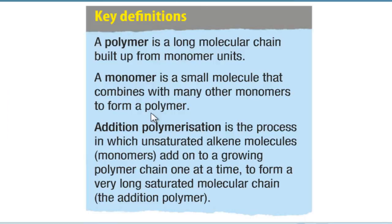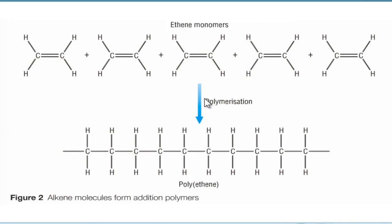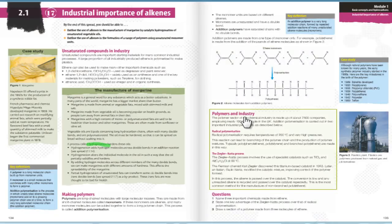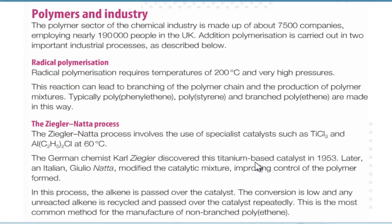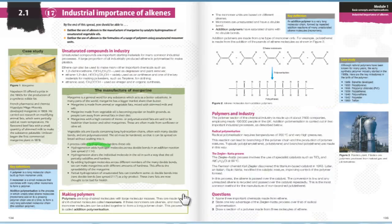And these are the definitions. A polymer is a long molecular chain built up from monomer units. A monomer is a small molecule that combines with many other monomers to form a polymer. Addition polymerization is the process in which unsaturated alkene molecules add onto a growing polymer chain one at a time to form a very long saturated molecular chain, or the addition polymer. This is basically what happens. We have lots of ethene molecules and we polymerize them. We make polyethene. It has brackets there because this is how it was originally deployed using ethene molecules. But when the double bonds are removed by excess hydrogen, then this is what happens. It makes a very long chain hydrocarbon. And that's it for this tutorial. Thank you.